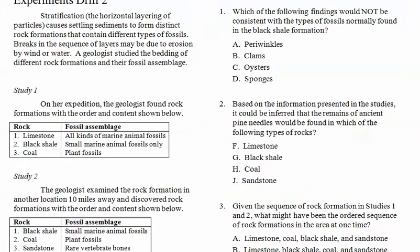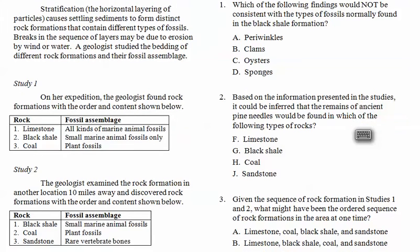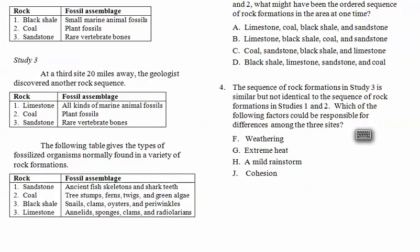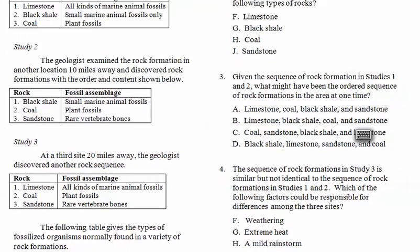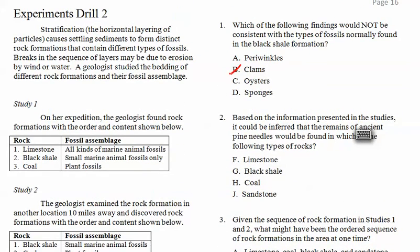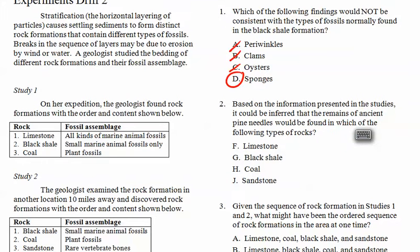Which of the following findings would not be consistent with the types of fossils normally found in the black shale formation? So, number one. Periwinkles, clams, oysters, sponges. How the heck would I know? Well, let's look at the black shale. Small marine animal fossils. Right? Well, that doesn't really help me. I don't know what a periwinkle is. So, down here. Black shale. Snails, clams, oysters, and periwinkles. Snails, clams, oysters, and periwinkles. So, that one got real confusing for people who did not look over all the data. So, that's what we mean by skim but read. Okay. There's some important information at the bottom. If I get confused, go look at it. So, you got D for number one. Based on the information presented in the studies, it could be inferred. Remains of ancient pine nodes we found and what type of rocks? We're looking for plant fossils. So, I'm going to go with coal.